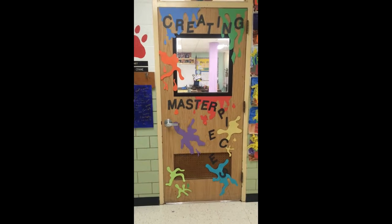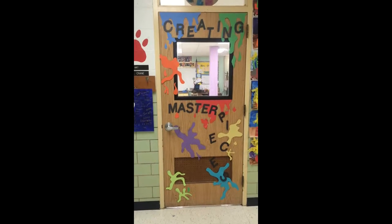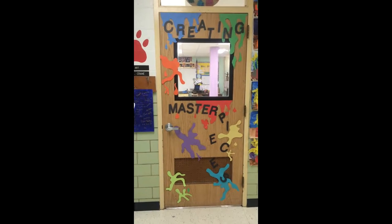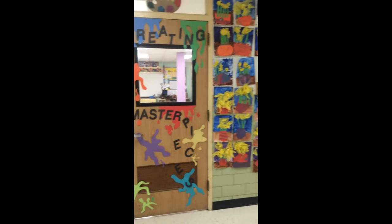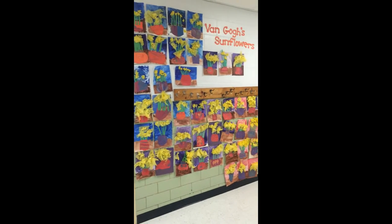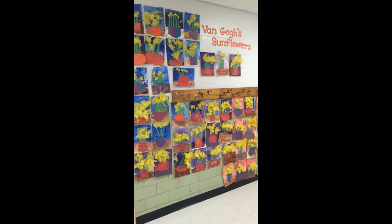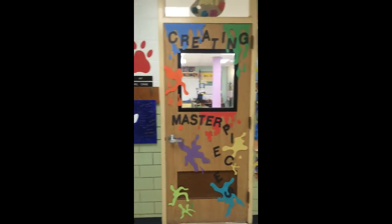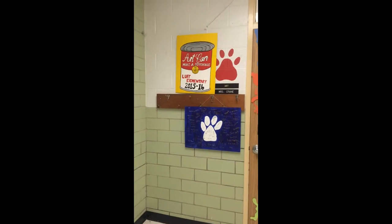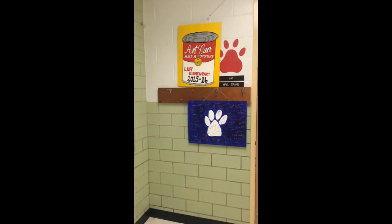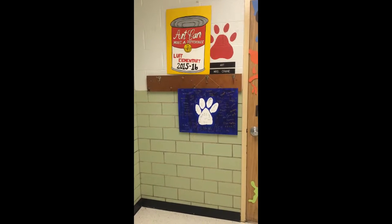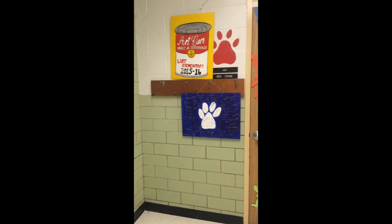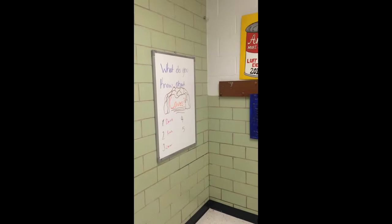Alright, so this is the front of my door. I have decorated it in a paint splotch theme — creating masterpieces and falling to pieces. To the right of my door is some of my first grade artwork about Vincent Van Gogh. To the left of my door is the art can that I create at the beginning of the year, some fun signage on board for families and friends that come for parent-teacher conferences. And then my whiteboard where I usually post a question and change it every two weeks.